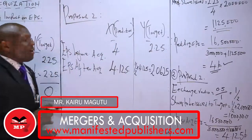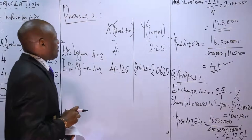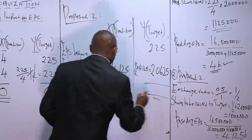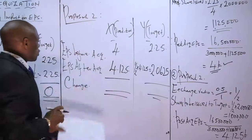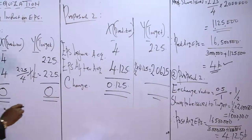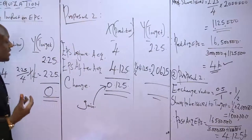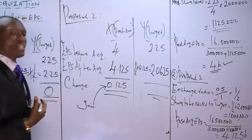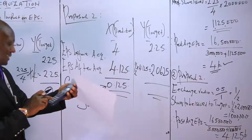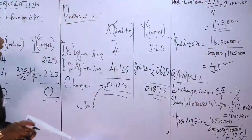The EPS after acquisition for the predator is four point one two five, which is greater than the EPS before the merger of four shillings — an increase of zero point one two five. For the target, the EPS after acquisition is two point zero six two five, compared to two point two five before — a decrease of zero point one eight seven five.